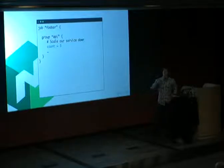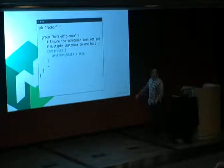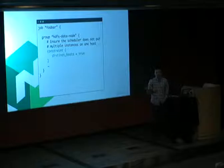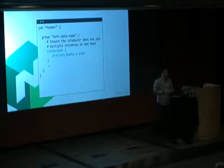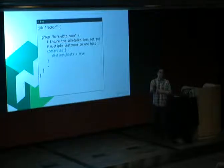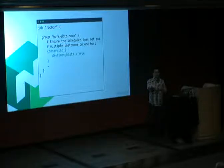Nomad doesn't currently have a plan command like Terraform, but that's coming. There are constraints — for example, the 'distinct hosts' constraint ensures no more than one instance runs on the same node. If you ask for five, you want them on five different machines. There's also arbitrary constraint support: you can tag a machine as being in a public subnet and Nomad will constrain scheduling to the right places.